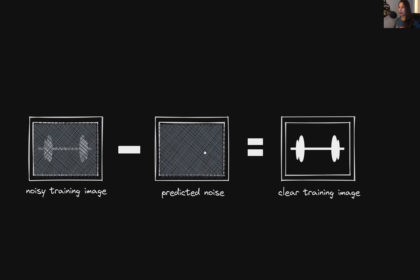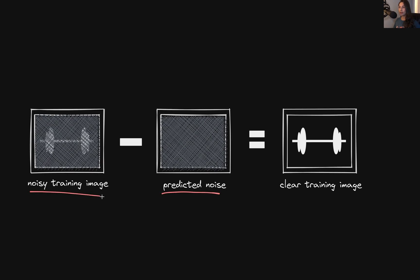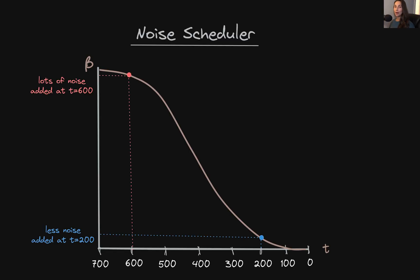We can then subtract the predicted noise from the noisy latent to get a clear image. The hope is that this image accurately depicts the underlying image from the training sample without the noise present. Having the network predict the noise turns out to be a simpler task than having it jump straight to predicting the training image underneath all of the noise. The noise scheduler is a tool that determines how much noise is added to the training images based on some predefined schedule, and the noise added is often referred to as beta, or sometimes sigma.